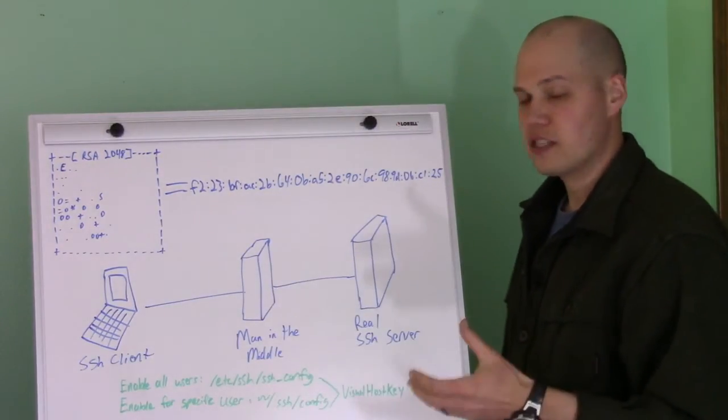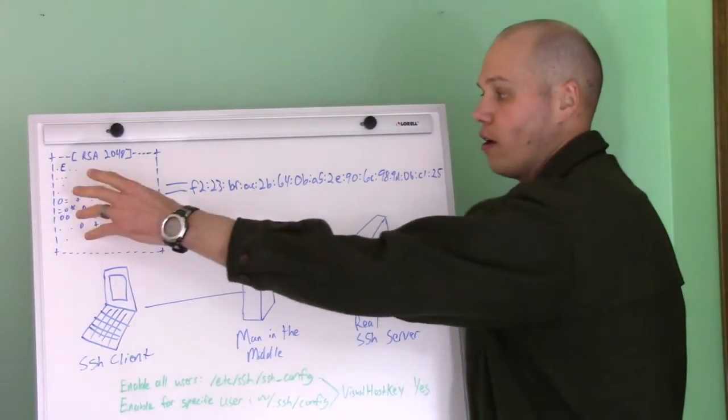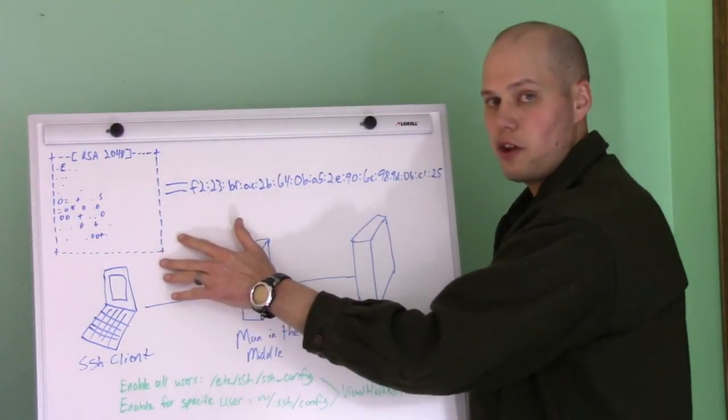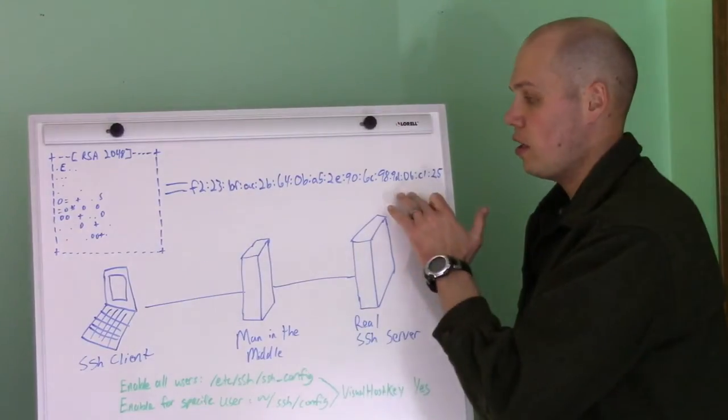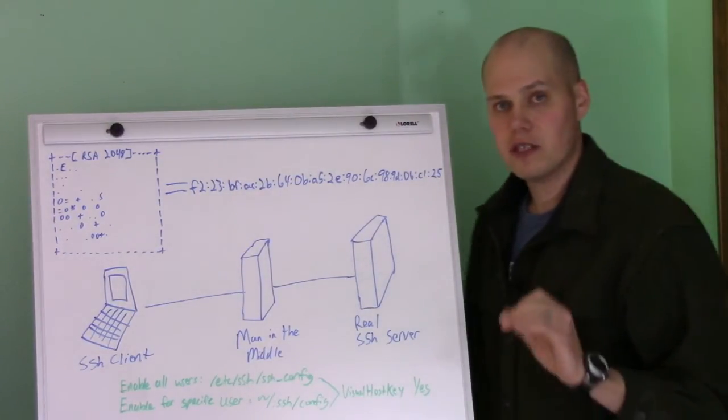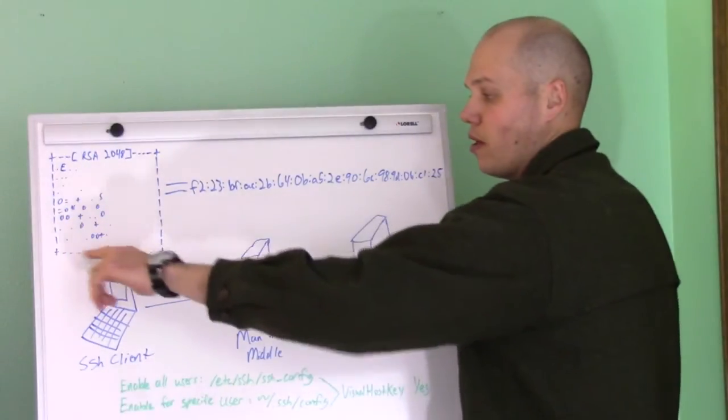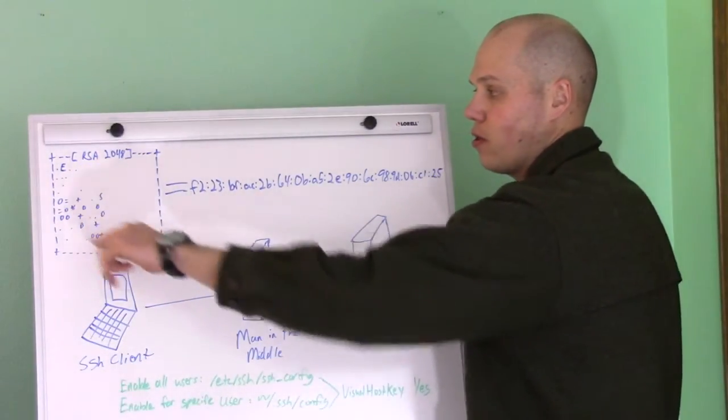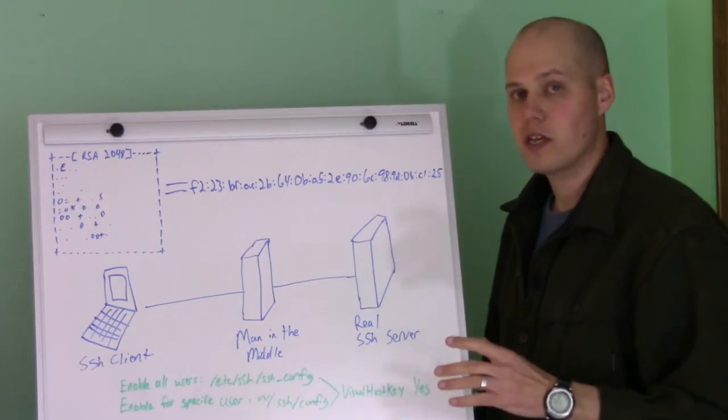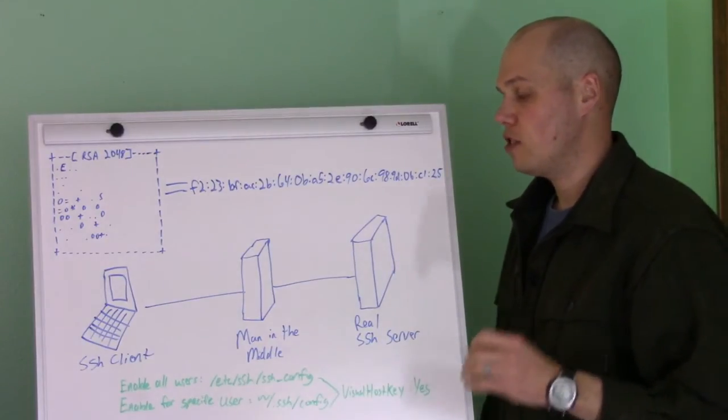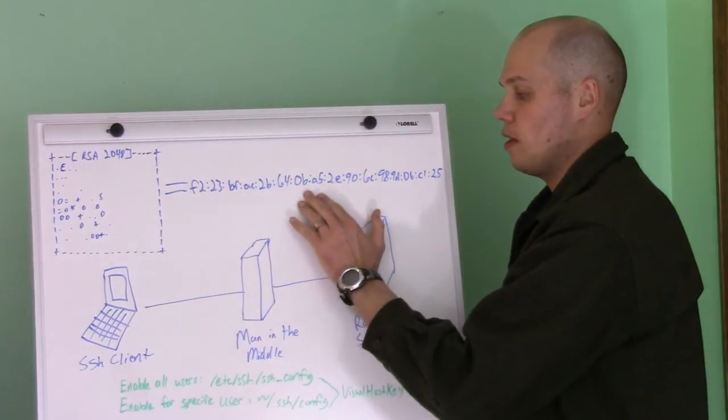And you'll see something like this. It's an ASCII character pattern, and something like this is much easier for a human to remember than this. So the theory is, if you enable this feature, every day when you connect to a server, it'll show you this. Every time you connect, it'll show you this visual host key. And the theory is, you can remember this a lot easier than you can remember this.